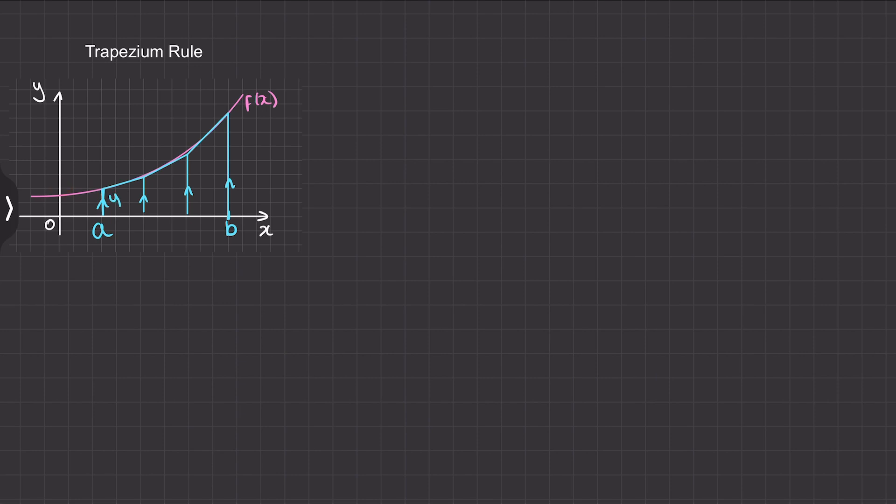So we'll call that y1. The next line here has a different height which we'll call y2 and then so on. So we have y3 and y4, and because each strip is of equal length we can just say the length we'll call h.